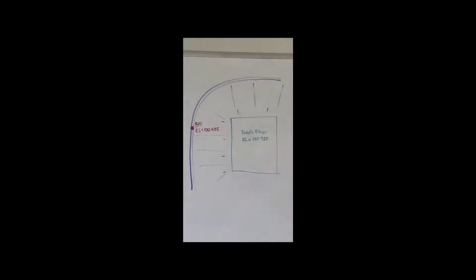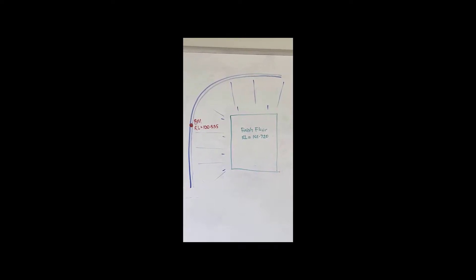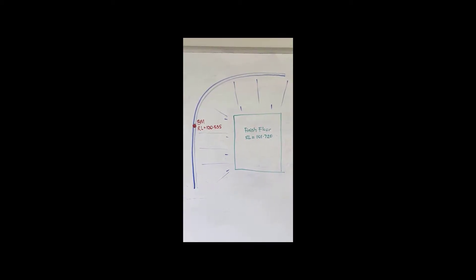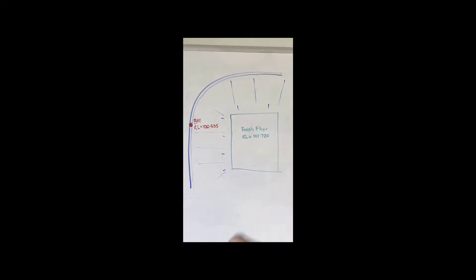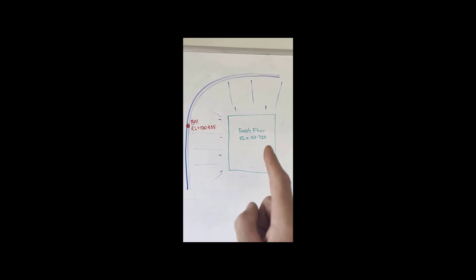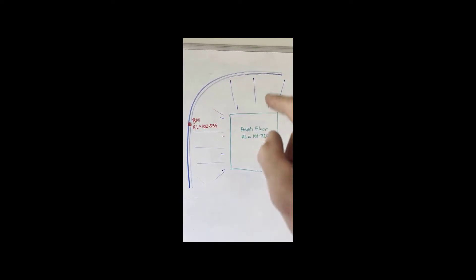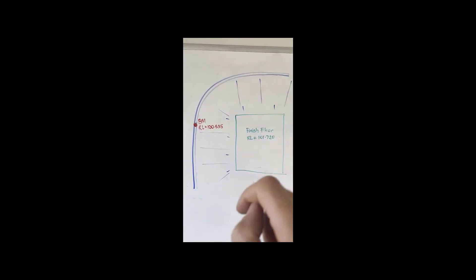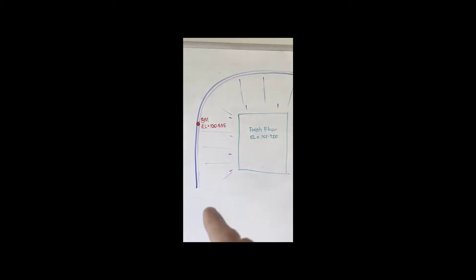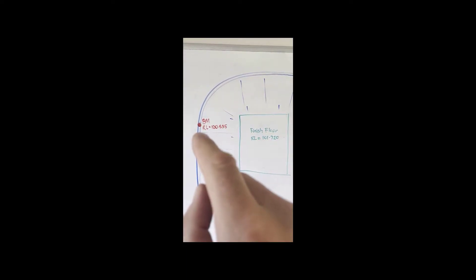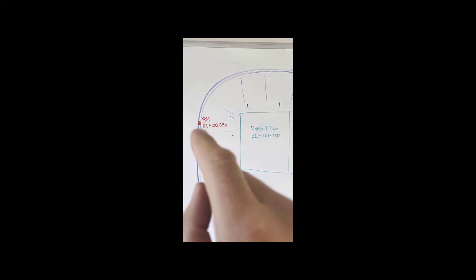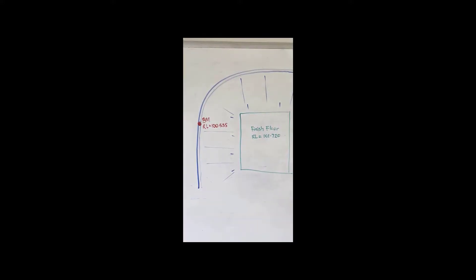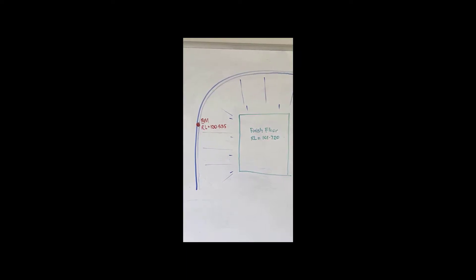Here's my job: I've got a floor pad here for a new building that I've got to construct. The finished floor height here is top of concrete at 101.720 reduced level — it's quite a bit higher than the curb around the edge of the job. There'll be some battering down to the curb. The benchmark I'm working off on the plan is on the top of the curb and it is RL 100.535.